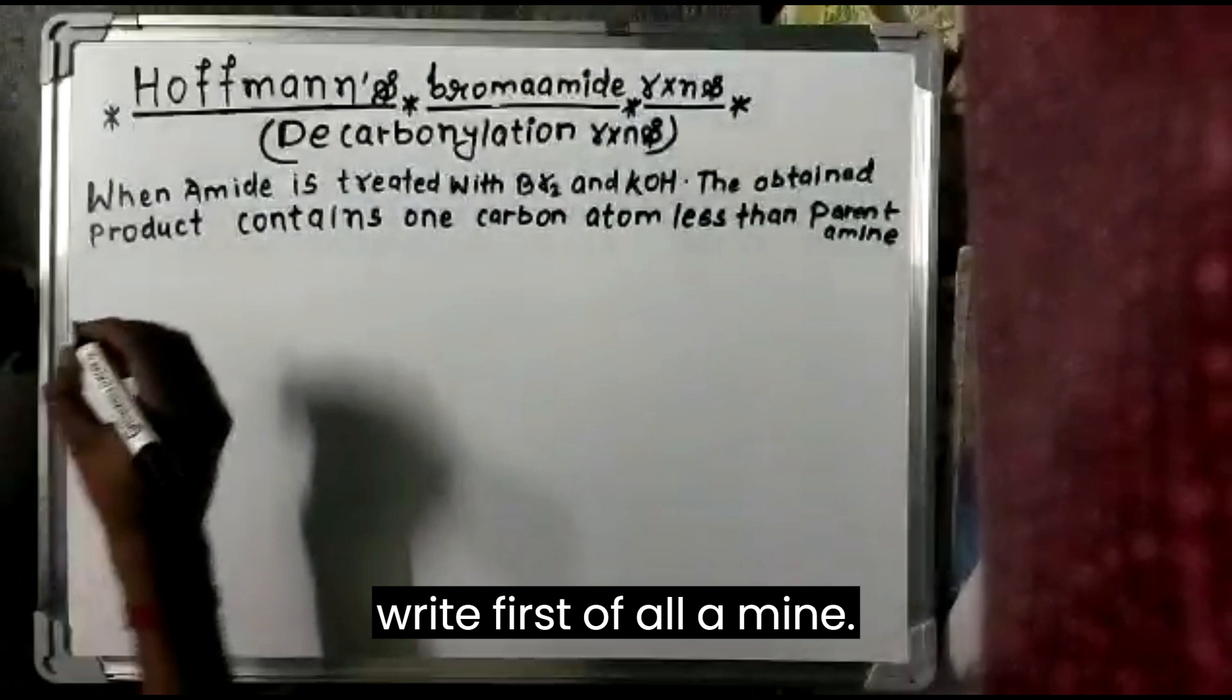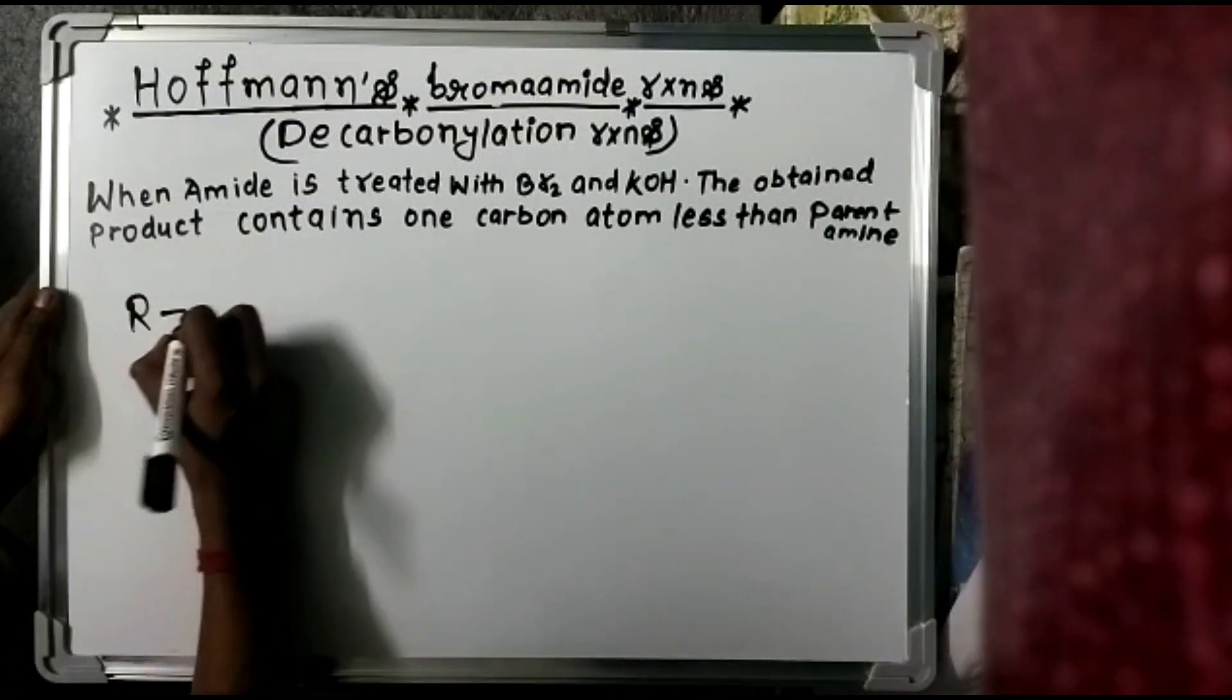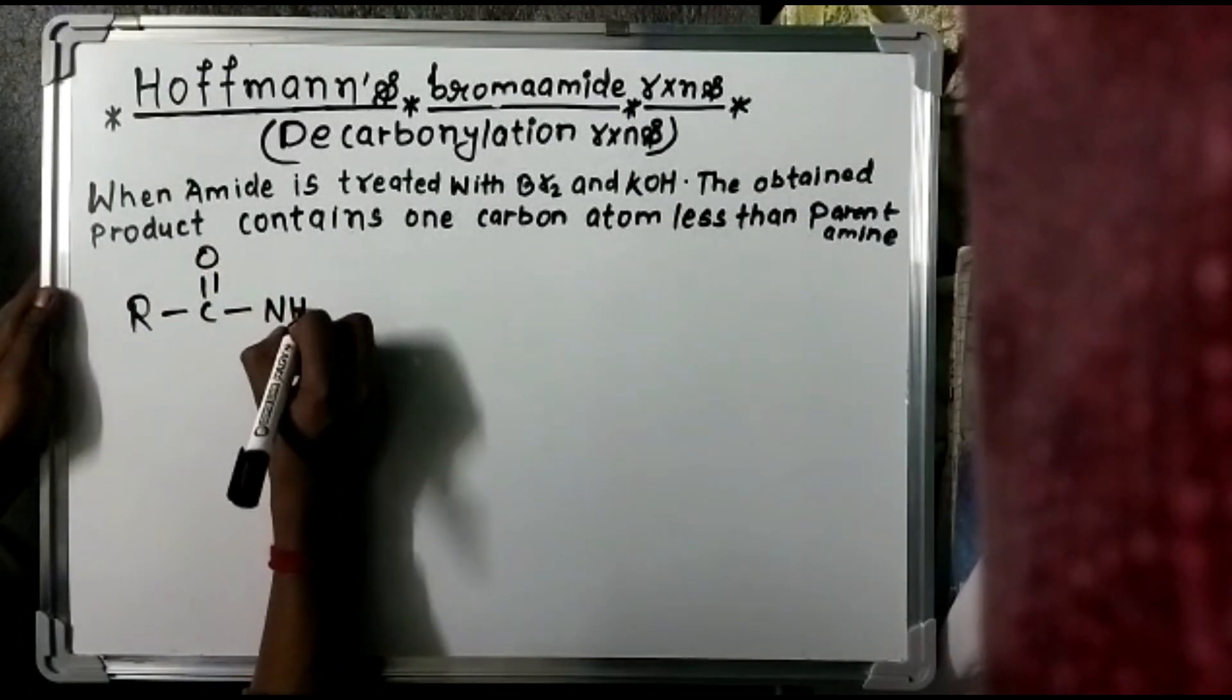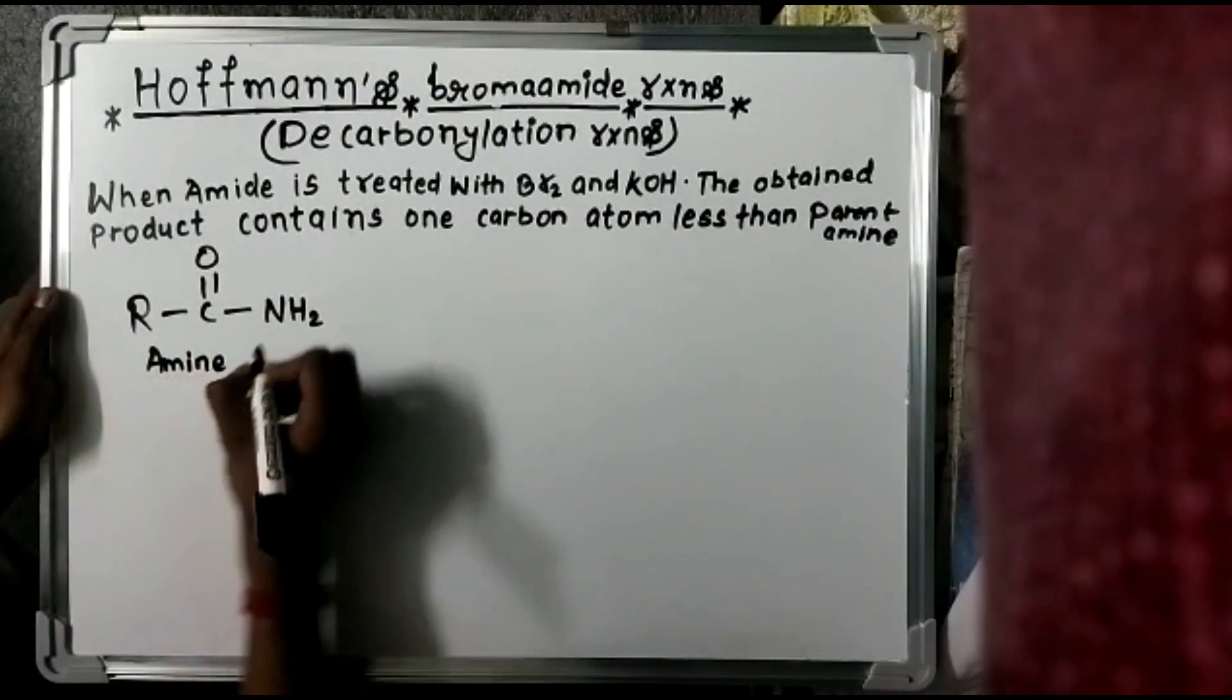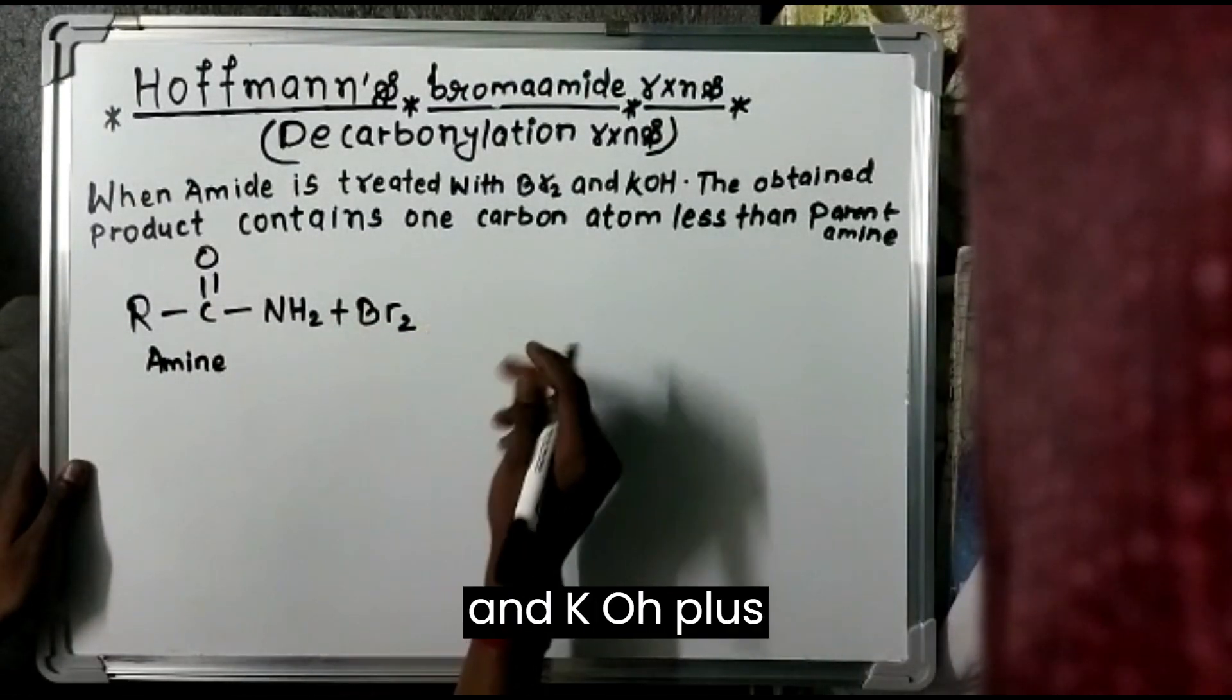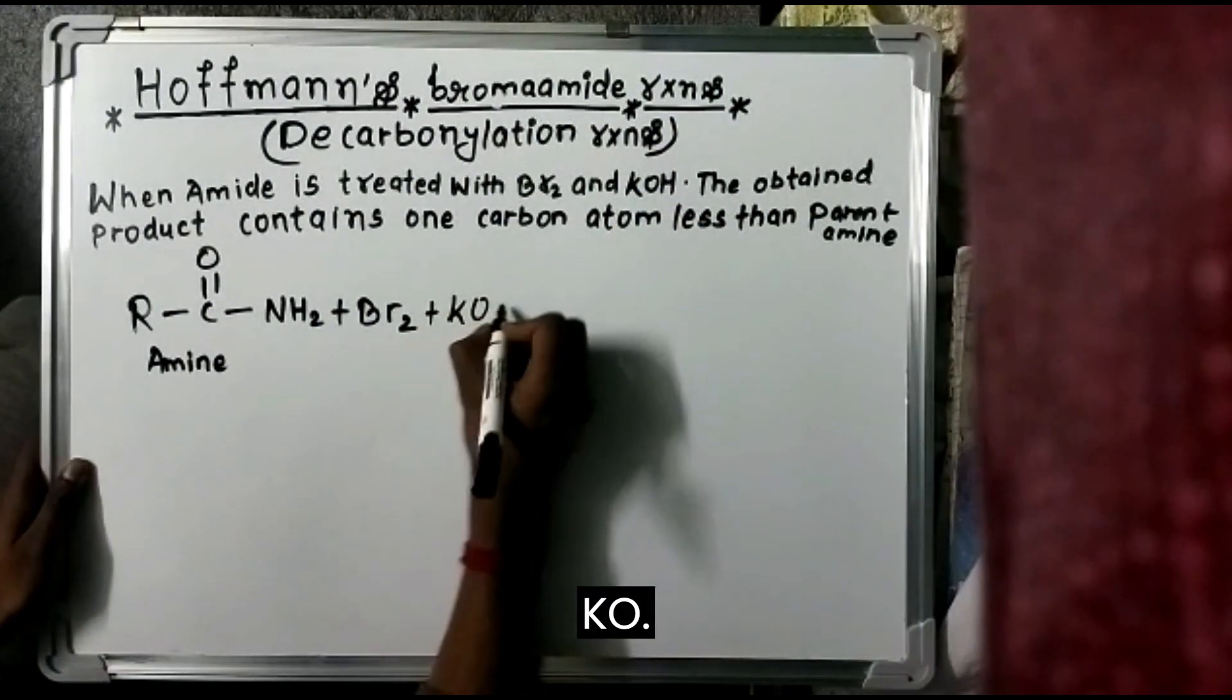So let's write, first of all, amine. Amine R, C double bond O and NH2. It is called amine.